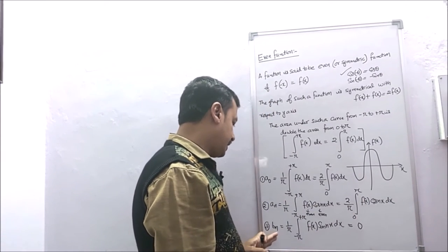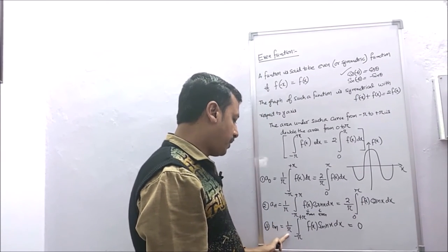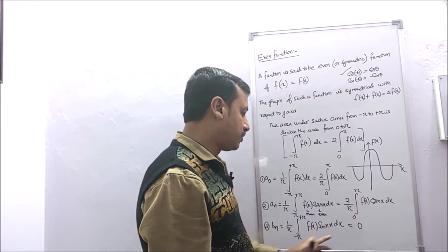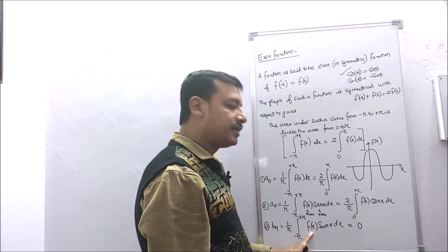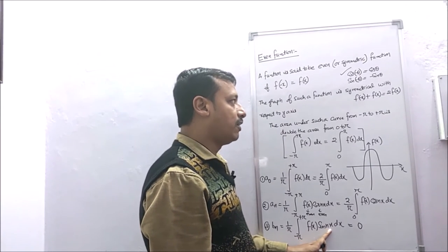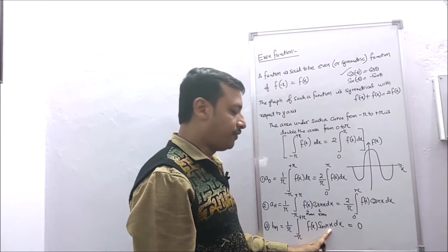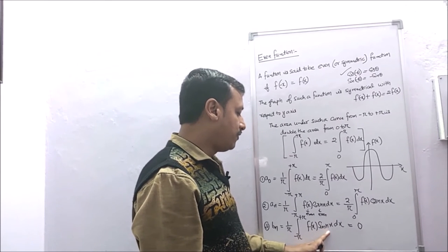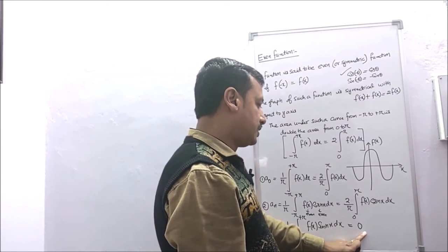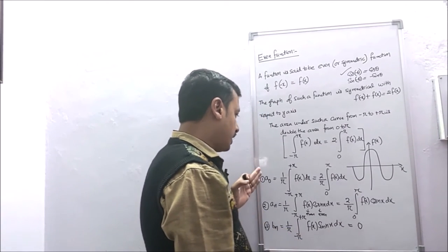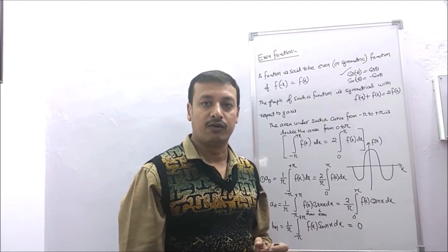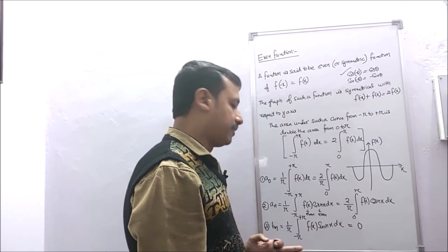For bn, the integral (1/π) ∫ from −π to +π f(x) sin(nx) dx equals 0, because f(x) is even and sin(nx) is odd, and the product of an even and odd function is odd, making the integral zero. So for an even function, there are only two Fourier coefficients: a0 and an, while bn = 0.